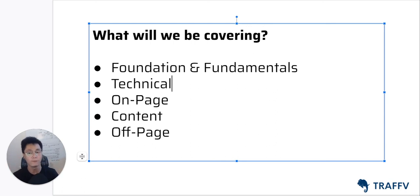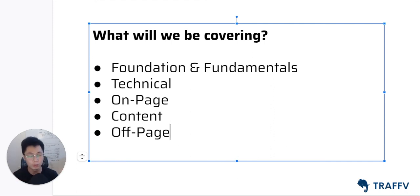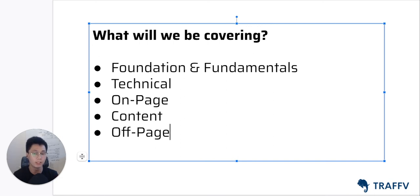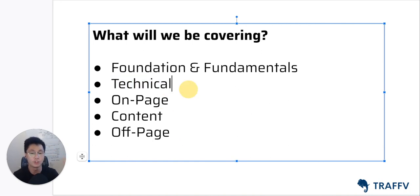On the other hand, if you fix your foundation and fundamentals, fix the technicality of your website, and Google can crawl and understand your website, then when you build links afterward, the ROI of those links will be significantly higher. All these pillars are important if you're going to be using SEO as a marketing channel. Depending on what type of business or website you have, different pillars will have different priorities. For example, for an e-commerce site, technicality is more important, but for a local site, technicality is not as critical. I'll be sharing this in the next lesson.